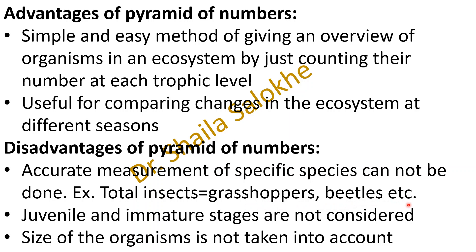Insects like grasshoppers and beetles are grouped together; only overall how many primary consumers are present in a given area is calculated, and therefore it will not give accurate measurement of species. Additionally, juvenile and immature stages are not considered, and the size of the organism is also not taken into account in the pyramid of numbers.